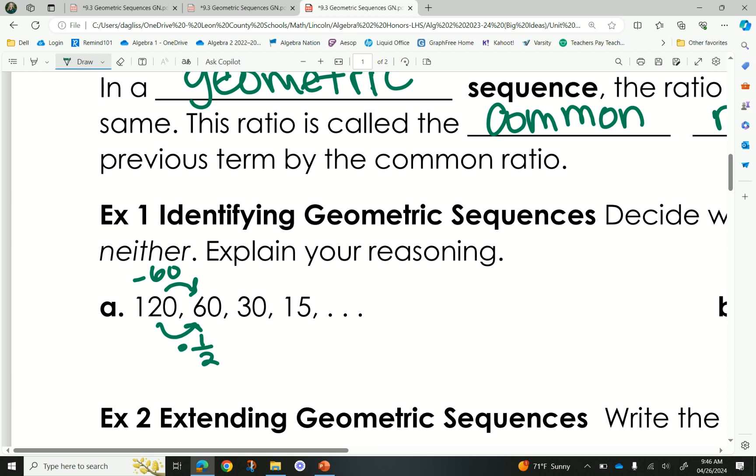Now, from 60 to 30, which one happens again? Multiply by. Multiply by, yeah. Yes. And then 30 to 15. Okay? So, because the multiplying continued and it was the same each time, I could say this is what? Oh, oh, geometric. Yes.